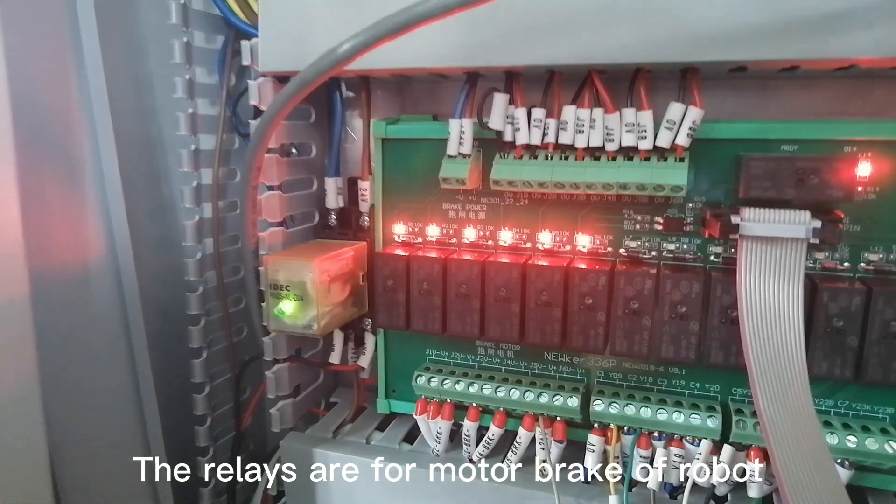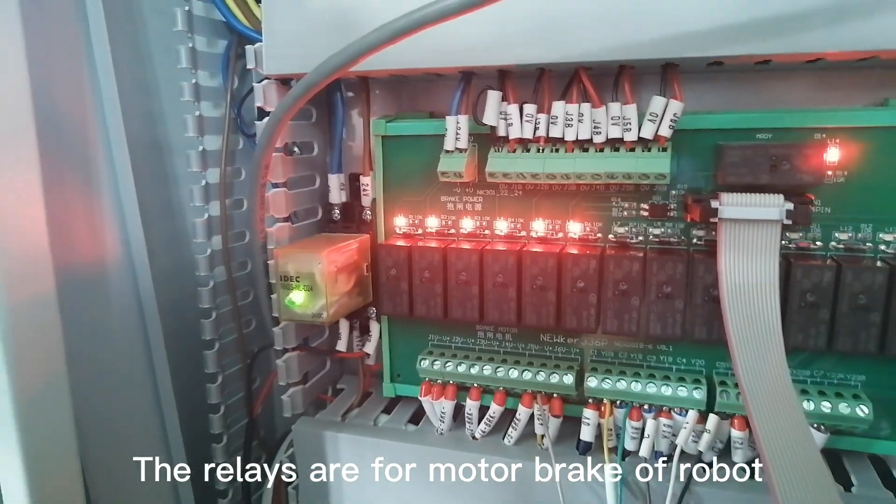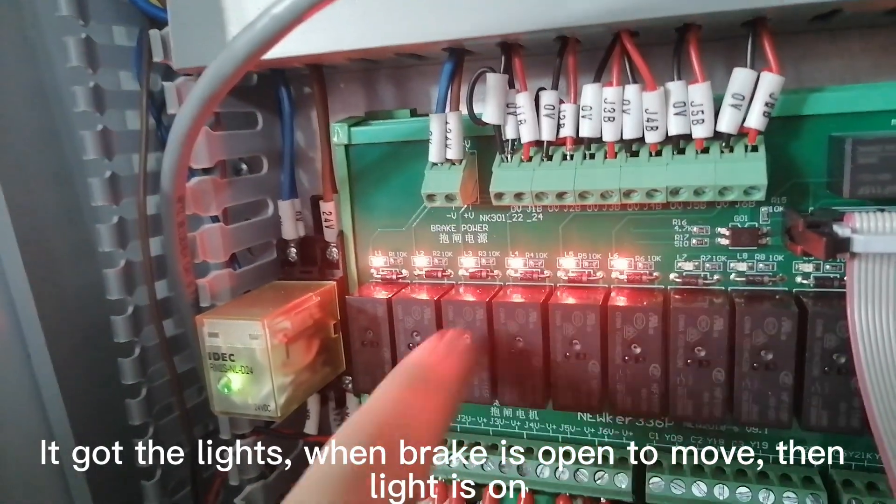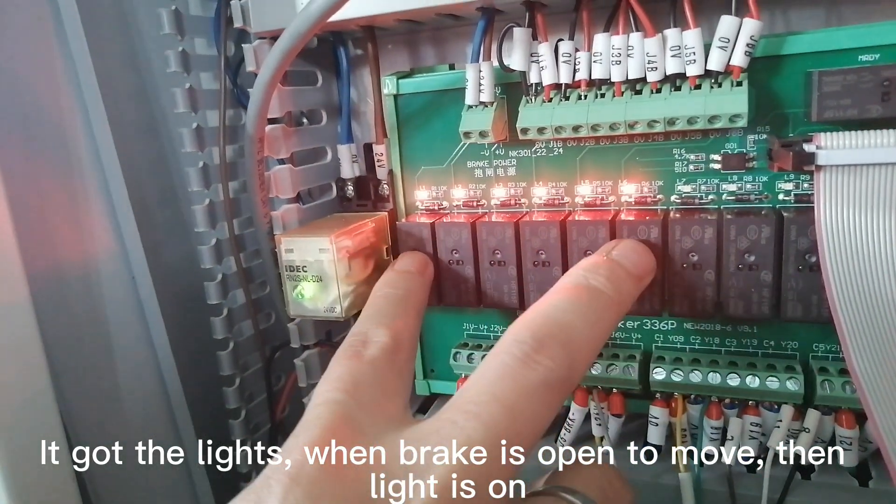The relays are for motor brake of robot. It got the lights, when brake is open to move, then light is on.